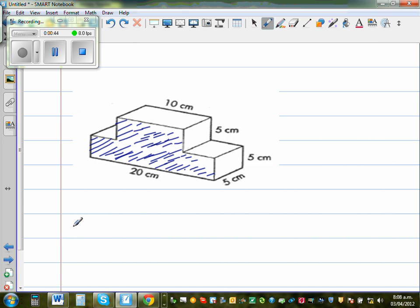So to find the volume of any prism, this is the general formula. Volume of a prism is equal to area of this base - in some books they also call it cross-section - area of base or cross-section times the height or the depth, whichever way you call it.